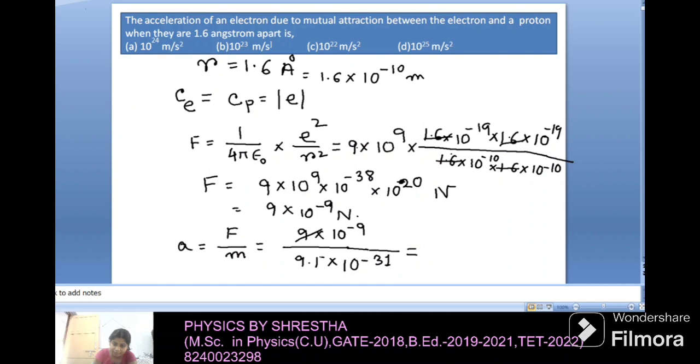If we consider these are the equivalent terms then we have 10 to the power minus 9 plus 31, that gives 10 to the power 22 meter per second square. This is the answer.